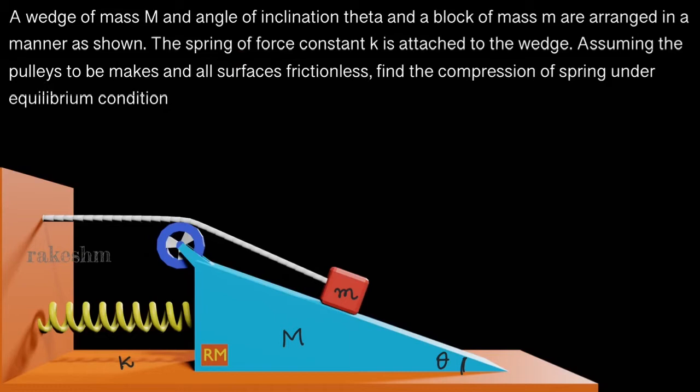The spring of force constant K is attached to the wedge. We see there is a spring here. Its force constant is K and it is attached to the wedge and the other end is attached to the wall.